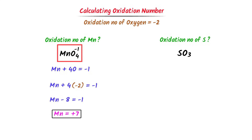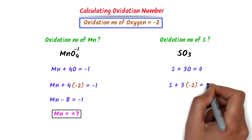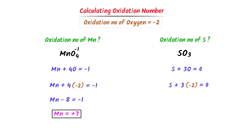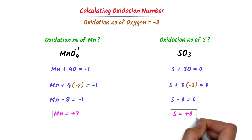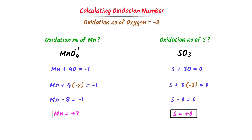So the oxidation state of manganese is +7 in this ion. For sulfur in the second molecule, there is 1 atom of sulfur and 3 atoms of oxygen, while the net charge on this molecule is 0. So I write: sulfur + 3(oxygen) = 0. Plugging in the oxidation state of oxygen: sulfur − 6 = 0, so sulfur = +6. Thus by this method we can easily find the oxidation state of any element.